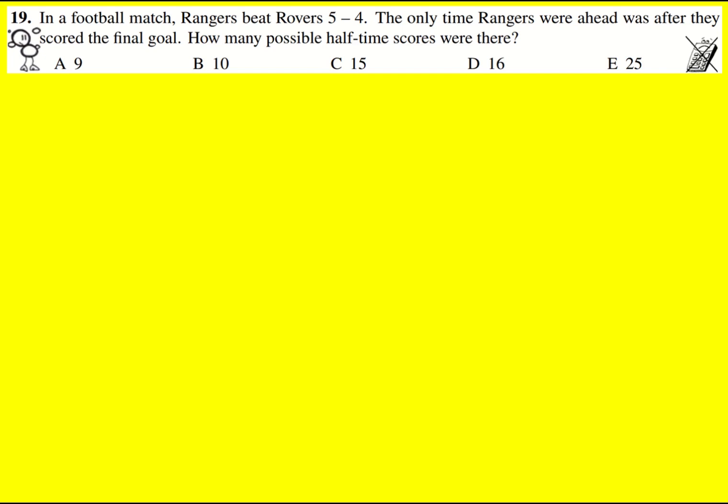We have a football match with Rangers beating Rovers 5-4, but the only time Rangers were ahead was after they scored their final goal. So they were never ahead otherwise. How many possible halftime scores were there? Well, I think the safest thing to do is actually list them, or at least think about the possibilities. I'm going to go with listing them.